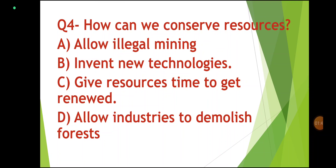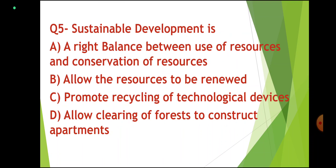Question number 5: Sustainable development is a right balance between the use of resources and conservation of resources. Options include: Allow resources to be renewed; Promote recycling of technological devices; Allow cleaning of resources; Developing forests to construct apartments. Correct answer, Option A: A right balance between the use of resources and conservation of resources.